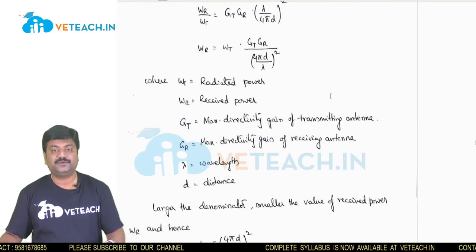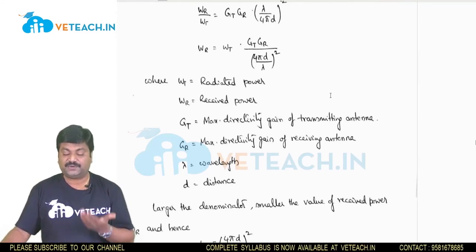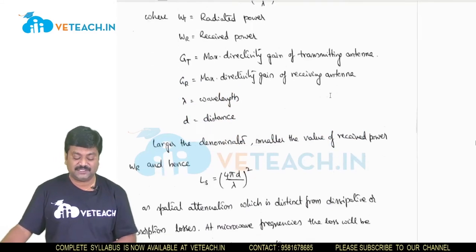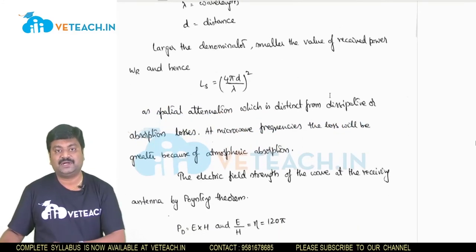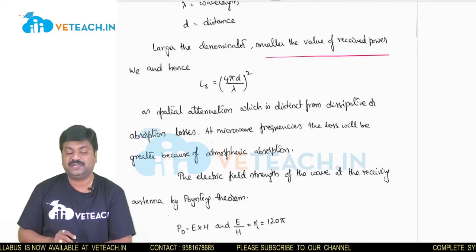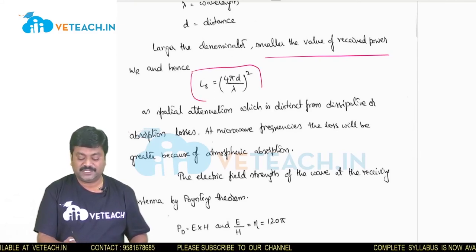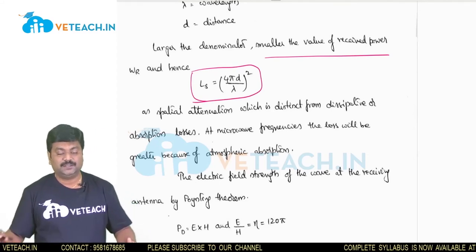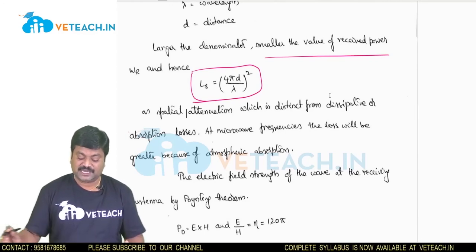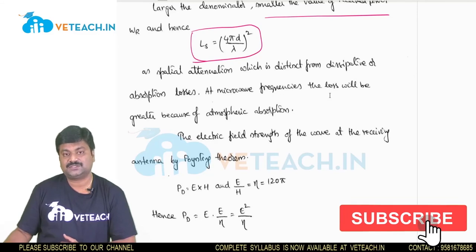Here, Wt is the radiated power, Wr is the received power, Gt is the maximum directivity gain of the transmitting antenna, Gr is the maximum directivity gain of the receiving antenna, λ is the wavelength, and d is the distance. If the denominator value is large, we receive very less power. The denominator is Ls = (4πd/λ)², and we will see this as spatial attenuation — dissipation or absorption losses considered in free space losses.